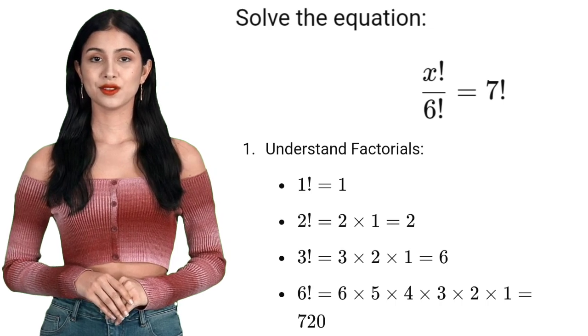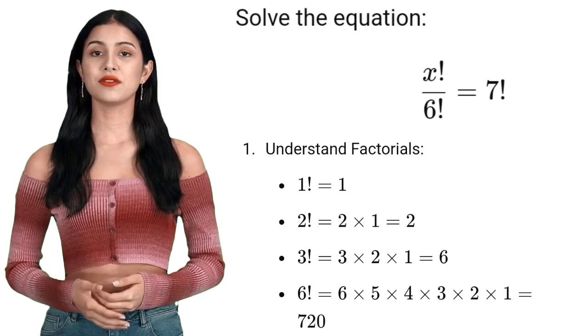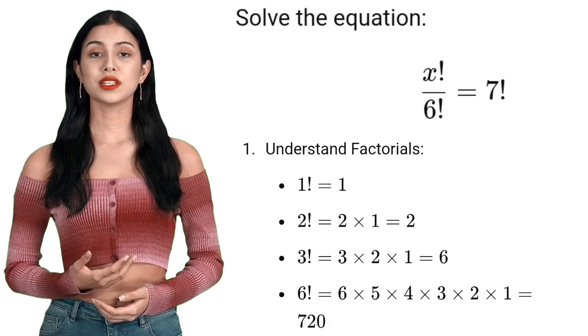Similarly, 6 factorial equals 6 times 5 times 4 times 3 times 2 times 1, which equals 720.